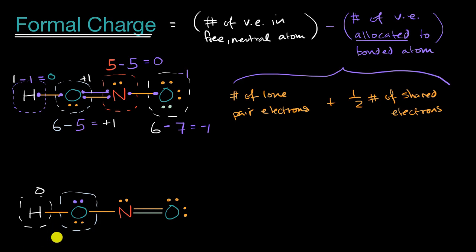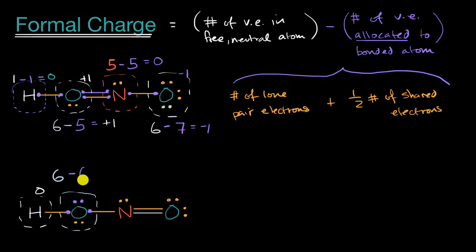Now let's think about this oxygen in the second structure. A free, neutral oxygen has six valence electrons. The number allocated to this one is two, four, five, and six — so six minus six is zero: no formal charge.